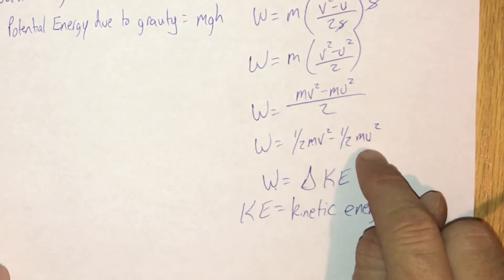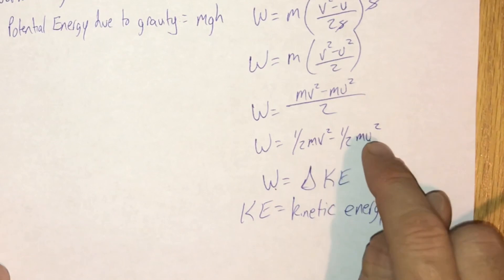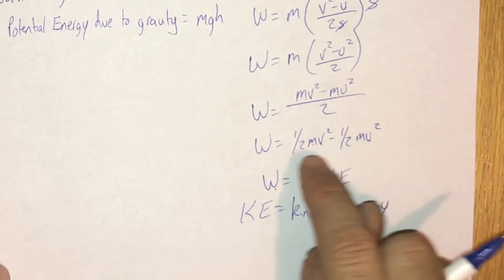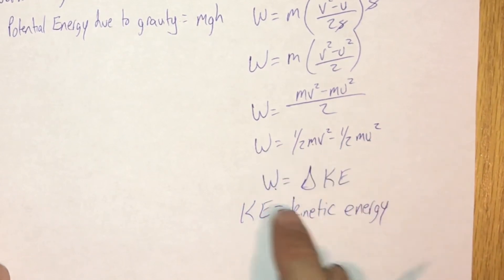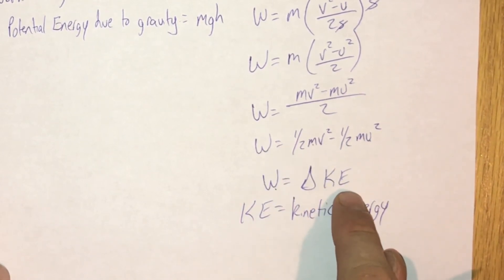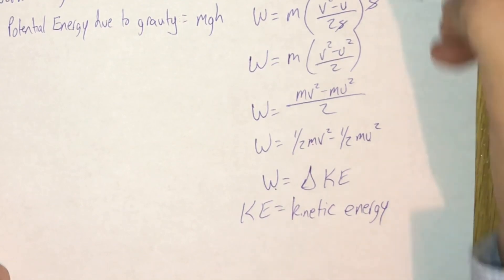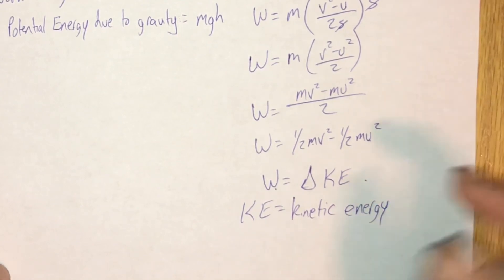Indeed, if we change an object's kinetic energy from any nonzero value, we can think of that change in kinetic energy as equal to the work done, as derived. This is called the work-kinetic energy theorem.